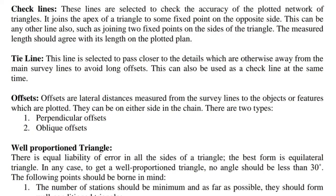Check lines: These lines are selected to check the accuracy of the plotted network of triangles. A check line joins the apex of a triangle to some fixed point on the opposite side, or it can join two fixed points on the sides of the triangle. The measured length should agree with its length on the plotted plan.